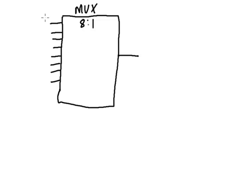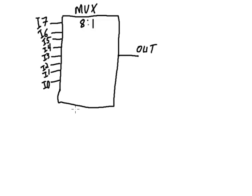And I'm going to have 1 output. So I7, I6, I5, I4, I3, I2, I1, and I0 — I've got 8 inputs and 1 output. The other thing we have is 3 select bits, labeled S2, S1, and S0. What happens is the value of these select bits is going to determine which one of these input bits gets mapped to the output.